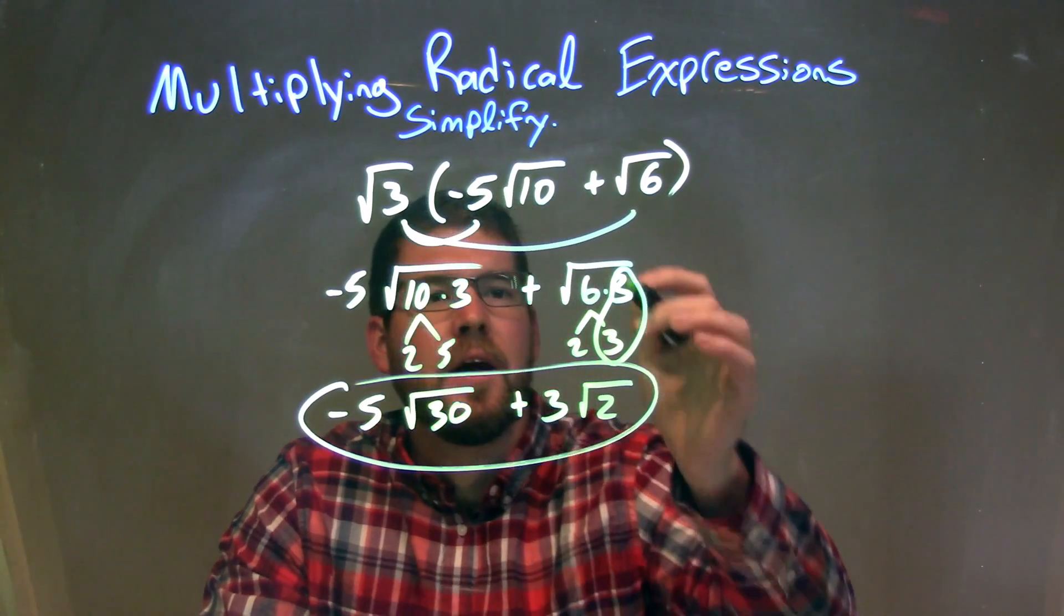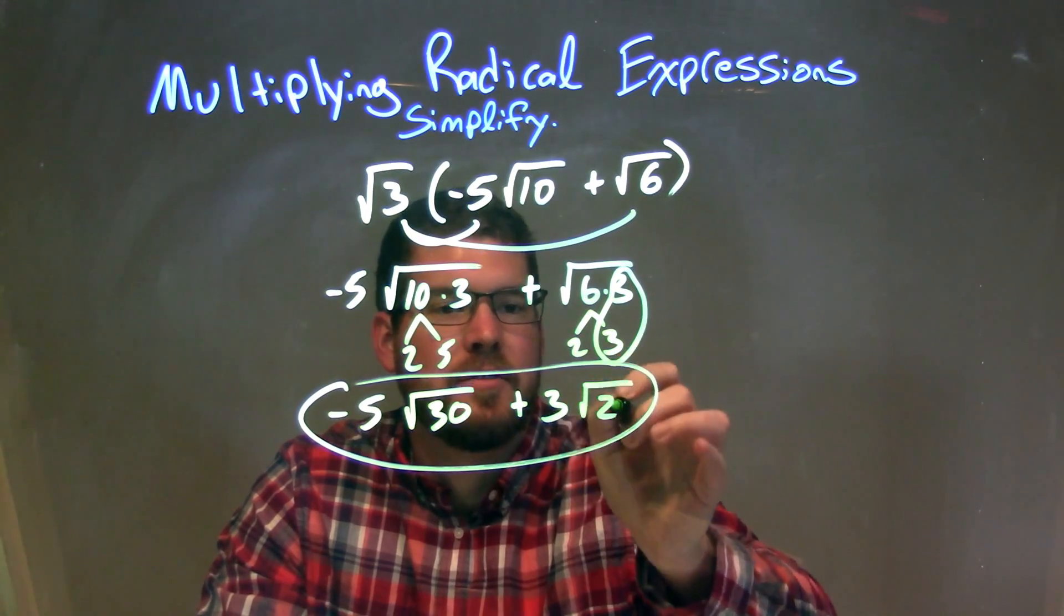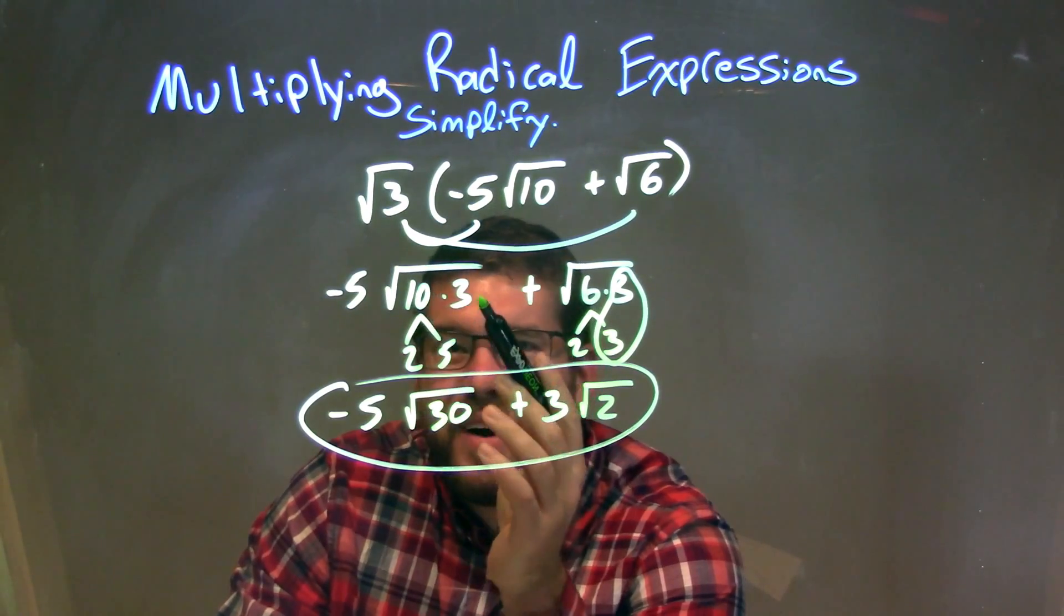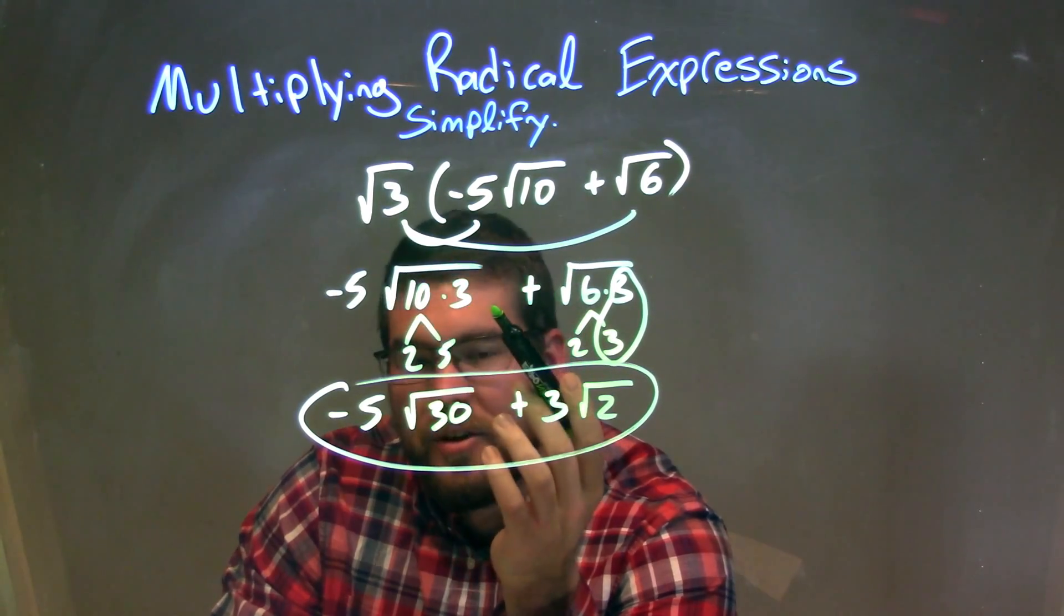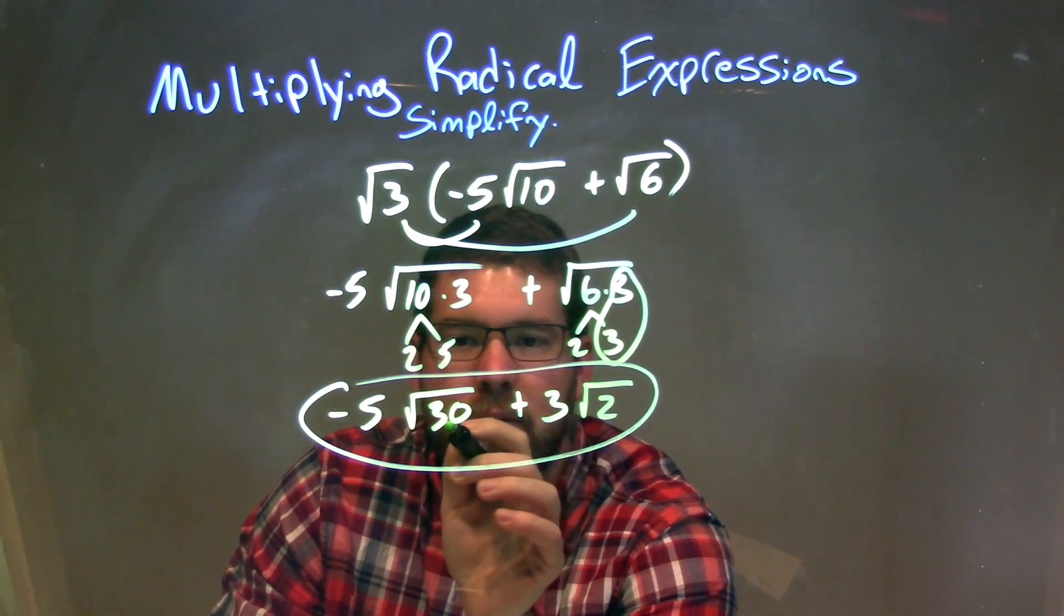Breaking them down, 6 times 3 is 2 times 3 times 3. I have a pair of 3s, and 3 goes on the outside, 2 stays on the inside. The 10 I broke down would be 2 times 5, but didn't find any pair, so it can't be any simpler. So it's 10 times 3 to be 30.